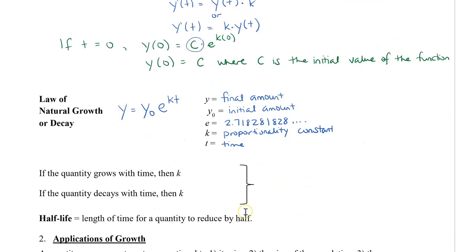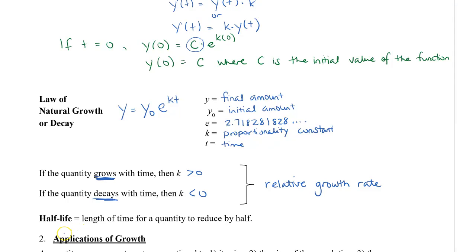A couple of notes: if the quantity grows with time, then k is going to be greater than 0 — that's when it's growing. If the quantity decays with time, then k is less than 0. This is relative growth rate, meaning that it depends on what it was before. One other term you might not have known is something called the half-life, which is the length of time for a quantity to reduce by half.